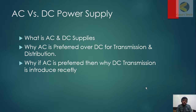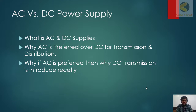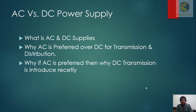The first question is: what is AC and DC supply? We already know that AC stands for alternating current and DC stands for direct current. DC we normally get from batteries, and AC is from generators. That first question is answered — obviously it's very simple.